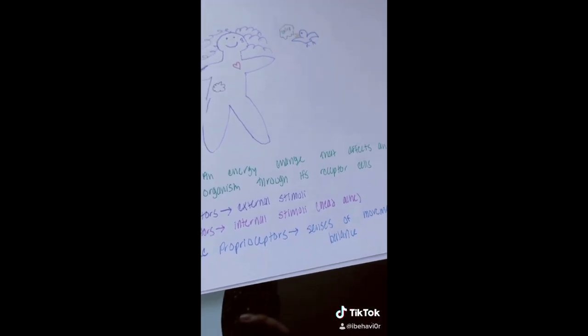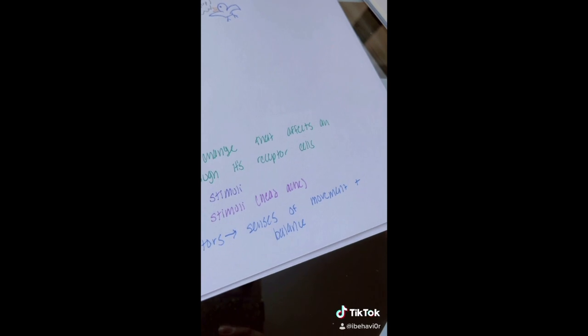Then we have interoceptors that signal internal stimuli, like having a headache, getting a stomach ache, those types of things. We also have proprioceptors which signal senses of movement and balance. In behavior analysis we're usually looking at the external stimuli and dealing with the external environment.